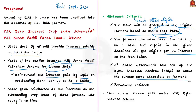Andhra Pradesh has also set up Rythu Bharosa Kendras (RBKs) — digital kiosks for farmers to check real-time market prices, place orders, and purchase government-tested, packed, and graded products. This entire scheme falls under the YSR Rythu Bharosa Scheme, which is an umbrella scheme covering crop losses, insurance premiums, and interest-free crop loans.